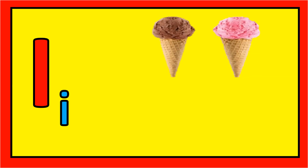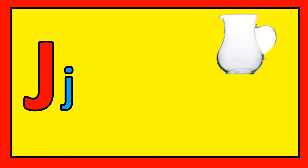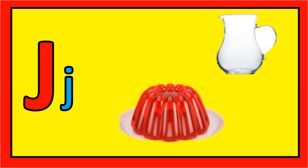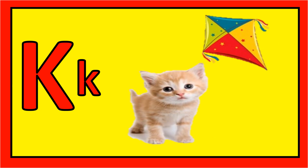I for ice cream, I for insect, J for jug, J for jelly, K for kite, K for kitten.